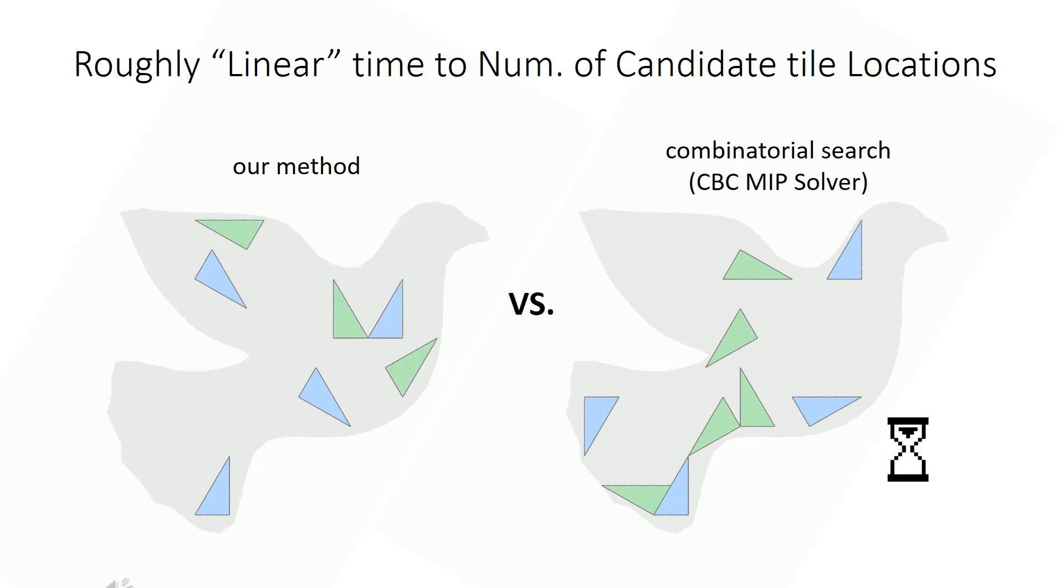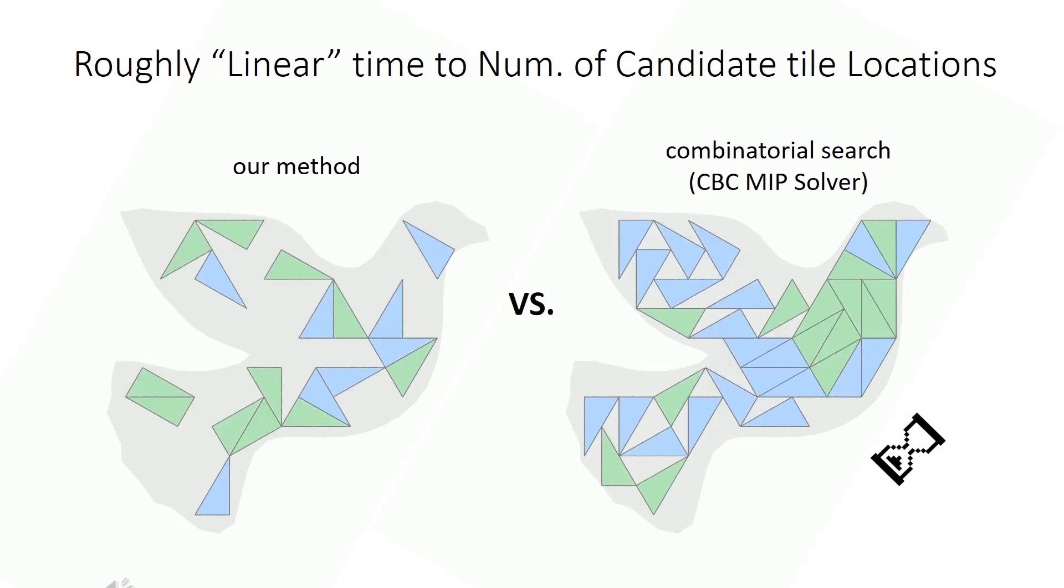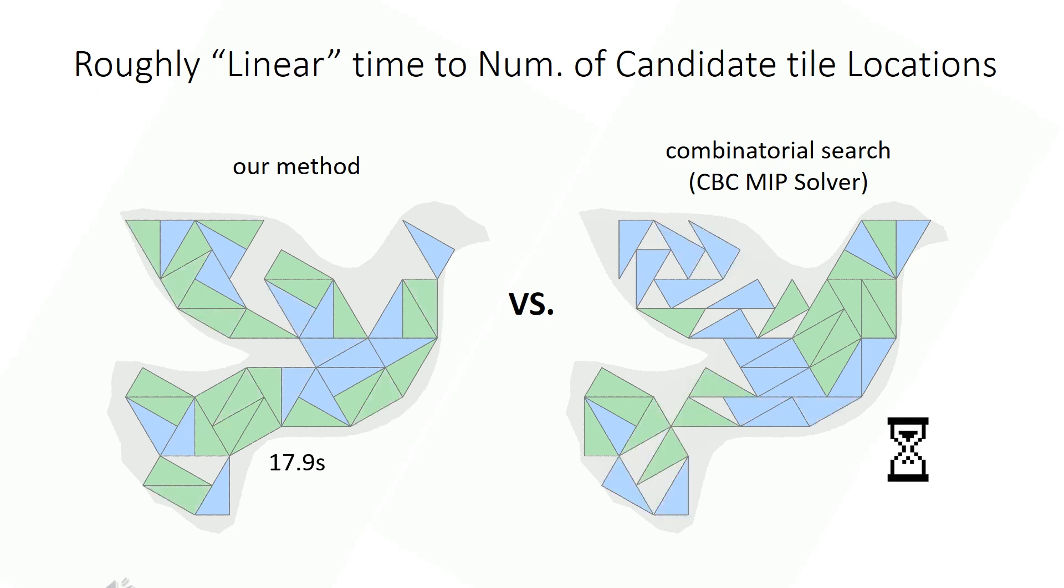Our trained network can help produce tilings in time roughly linear to the number of candidate tile locations, significantly outperforming traditional combinatorial search.